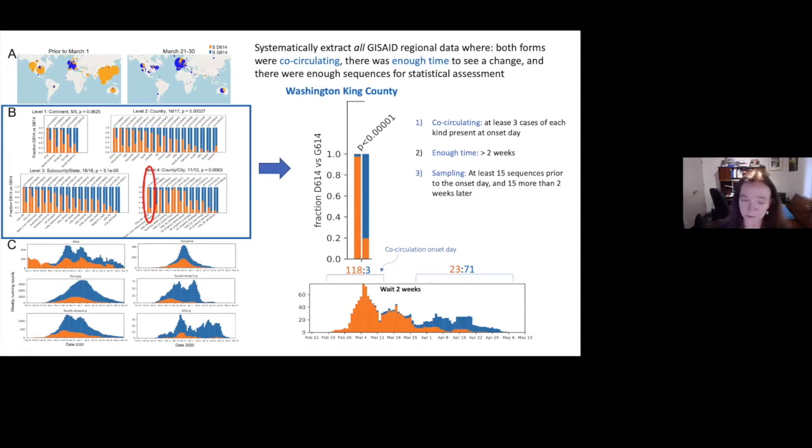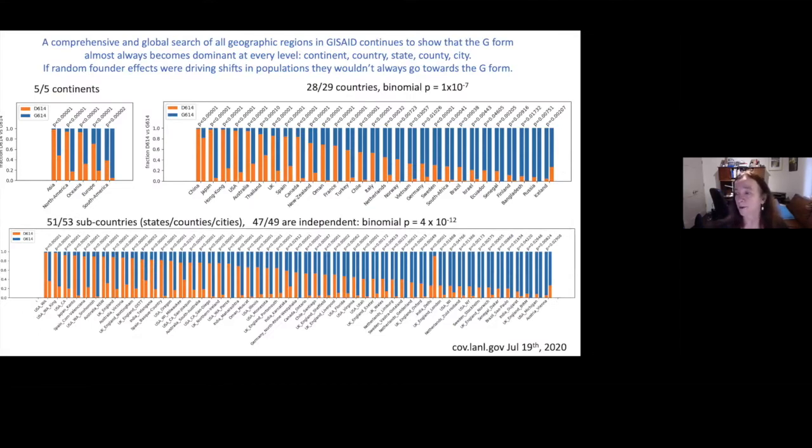So it was the repetition that was striking to us. If it had been in any small number of countries, you wouldn't have believed it was interesting. This is a more current one from July 19th. If you do this now, there are 121 different places. It's all gone to the new form, the G form, and there's only a couple of exceptions in the entire 121 cases. This is continent, country, and county city level.